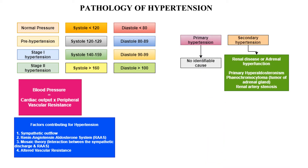There are two kinds of hypertension. Primary hypertension has no identifiable cause. Secondary hypertension is due to renal disease or adrenal hyperfunction — primary hyperaldosteronism, pheochromocytoma (a tumor of the adrenal gland), or renal artery stenosis.